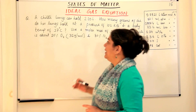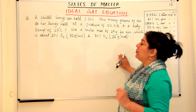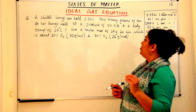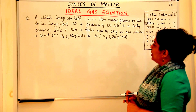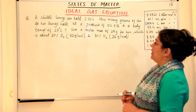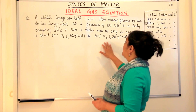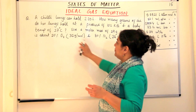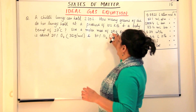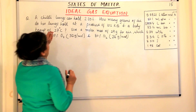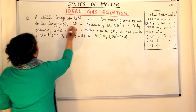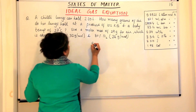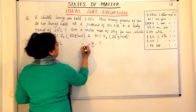So the answer is 2.5 × 10² mol. Let us solve another problem. A child's lungs can hold 2.20 litres — that is the volume. How many grams of air do her lungs hold at a pressure of 102 kilopascals and a body temperature of 37 degrees Celsius? Use a molar mass of 29 grams for air, which is about 20% oxygen (32 g/mol) and 80% nitrogen (28 g/mol). So we take the average molar mass of air as approximately 29 grams. The volume is 2.20 litres, and the mass is what is asked.